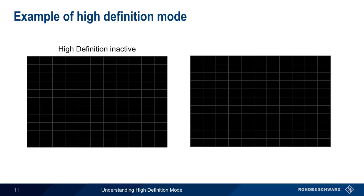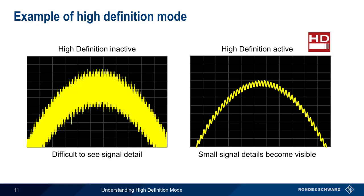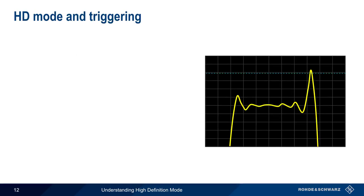Let's look at an example of high-definition mode. With high-definition mode inactive or off, noise superimposed on a signal can make it difficult to see signal details. Activating high-definition mode increases vertical resolution and makes smaller signal details more easily visible. Here, a very low level of periodic amplitude modulation can be seen on the measured signal.